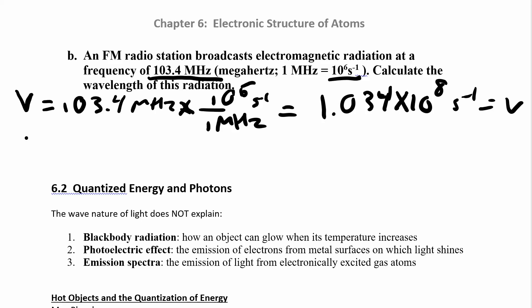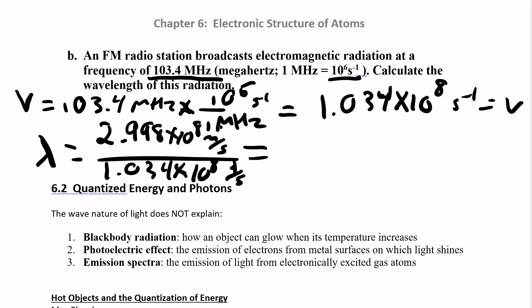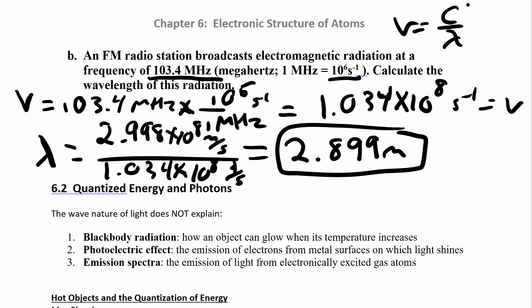And we want to find lambda. So new equals C over lambda. What's lambda? C over new. So C is the speed of light, that's the 2.998 times 10 to the 8 meters per second divided by frequency, 1.034 times 10 to the 8, 1 over seconds or seconds to the negative 1. So those units are going to cancel and you're going to end up with meters, which is great because that's what we were looking for. 2.99 meters. So be able to convert between those two things. New equals C over lambda. C is a constant, nu is the frequency, lambda is the wavelength.